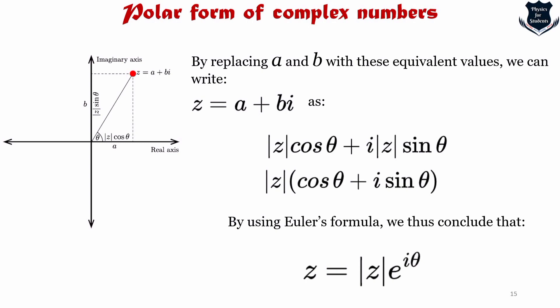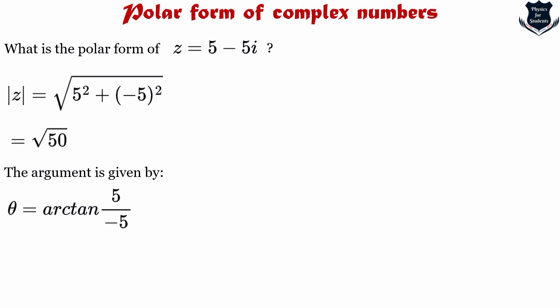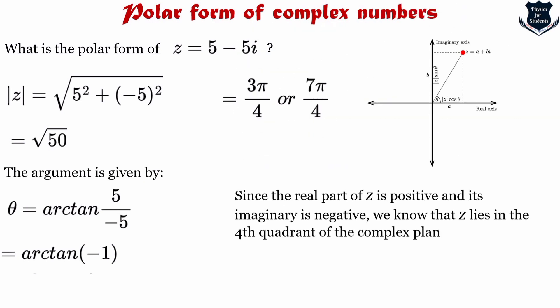Let us see an example. What is the polar form of z = 5 - 5i? We first find the modulus: |z| = √(25 + 25) = √50. The argument is arctan(−5/5) = arctan(−1), giving −π/4 or equivalently 7π/4. Since the real part of z is positive and the imaginary part is negative, z lies in the fourth quadrant of the complex plane. Therefore θ = 7π/4, and the polar form is z = √50 · e^(i·7π/4).